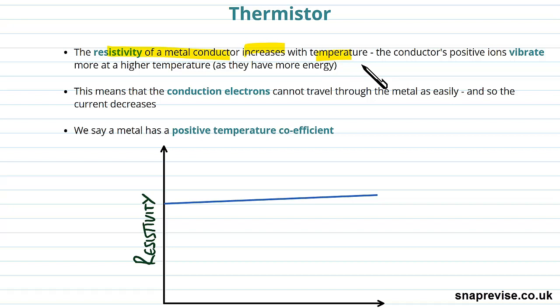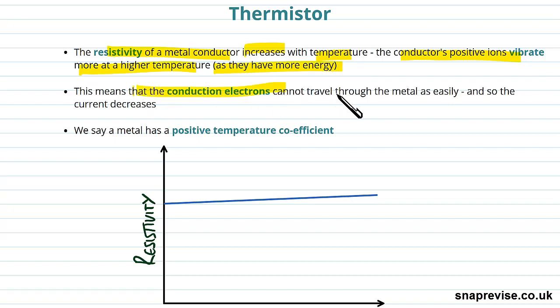The reason why the resistivity of a metal conductor increases with temperature is that it's made up of positive ions that the electrons are moving through to get current going. As the conductor heats up, its positive ions vibrate more because they have more energy. Because of that, conduction electrons can't travel through the metal as easily — they collide with these positive ions that are shaking about more, and that causes current to be less easily passed through the component.